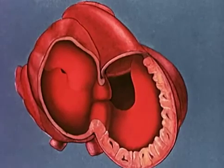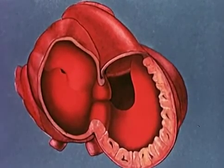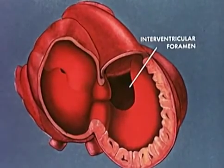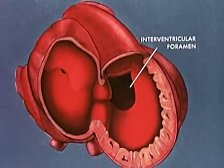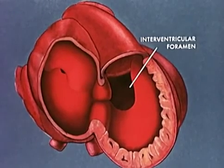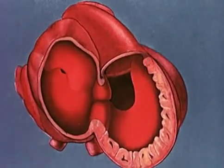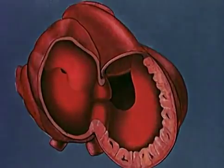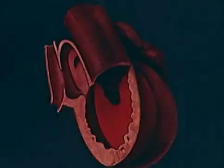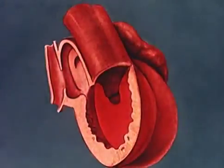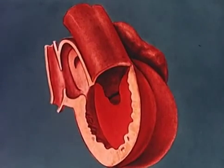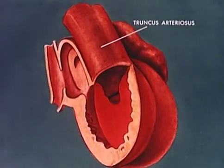An opening persists between the ventricular cavities. Closure of this interventricular foramen awaits the elaboration of a complex spiral septum, which splits the truncus arteriosus and conus region into the aorta and pulmonary artery. The formation of this partition is more clearly seen if the heart is turned by 45 degrees. Originally, the right and left ventricles share a common outflow channel, the truncus arteriosus, which gives rise to the aortic arches.